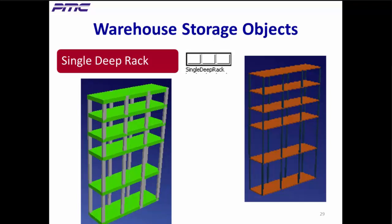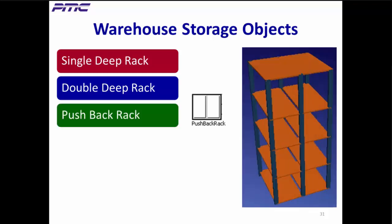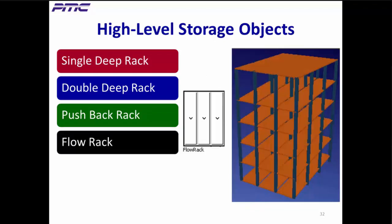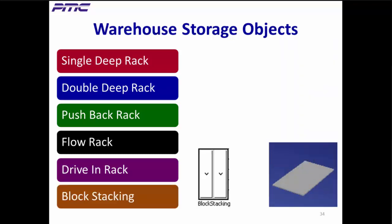For 3D, you can also change shelf and column dimensions and colors. The double deep rack is similar to the single deep rack but is also two shelves deep. The pushback rack is designed for use with a deep reach fork truck. The flow rack is loaded at the back, and parts roll or flow to the front for picking. The drive-in rack allows forklifts to drive directly into the lane of stacked rows. And block stacking models inexpensive floor storage.